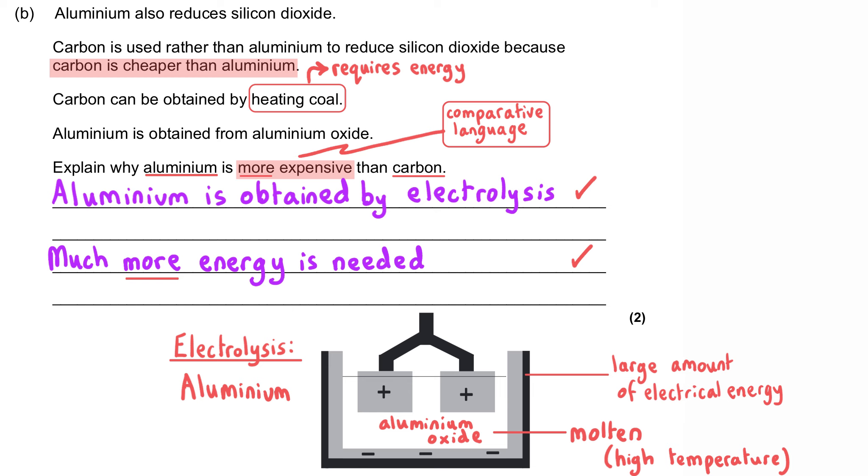Much more energy is needed. And that gets us our second mark after saying that electrolysis is needed to extract the aluminium. And that would be our first mark.